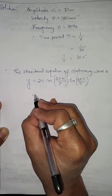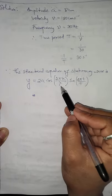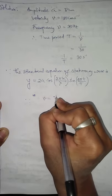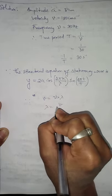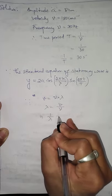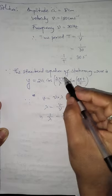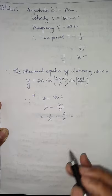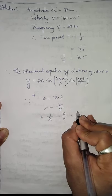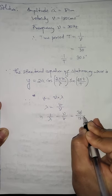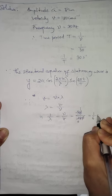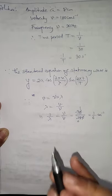Since wavelength λ = v/ν, we get 1/λ = ν/v = 30/180 = 1/6 per centimeter. I will substitute 1/λ = 1/6 directly into the equation, rewriting 2πx/λ as 2πx × (1/λ).